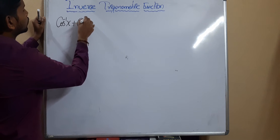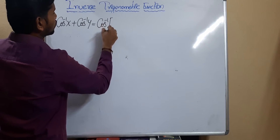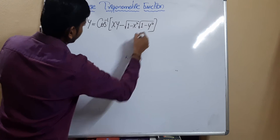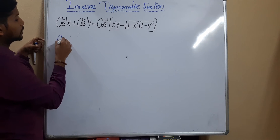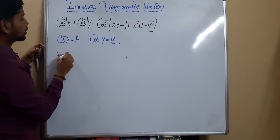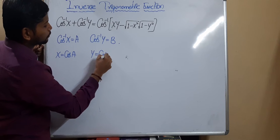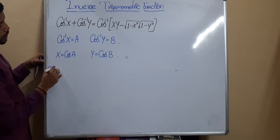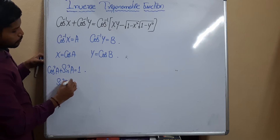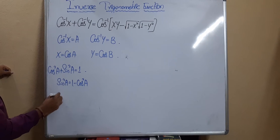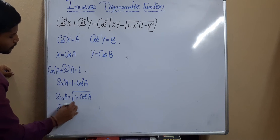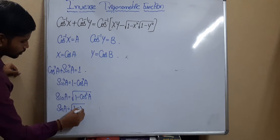The next formula is: cos⁻¹(x) + cos⁻¹(y) = cos⁻¹(xy − √(1 − x²)·√(1 − y²)). Now to derive it: let cos⁻¹(x) = a and cos⁻¹(y) = b, so x = cos a and y = cos b. Then cos²a + sin²a = 1, so sin²a = 1 − cos²a, and sin a = √(1 − cos²a) = √(1 − x²).